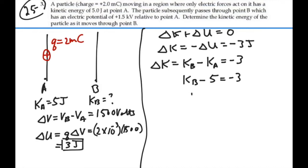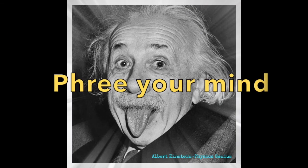Add a 5 to both sides, and the kinetic energy at B is equal to a negative 3 plus 5, or 2 joules. So, the kinetic energy of the particle as it moves through point B is 2 joules. Thank you.